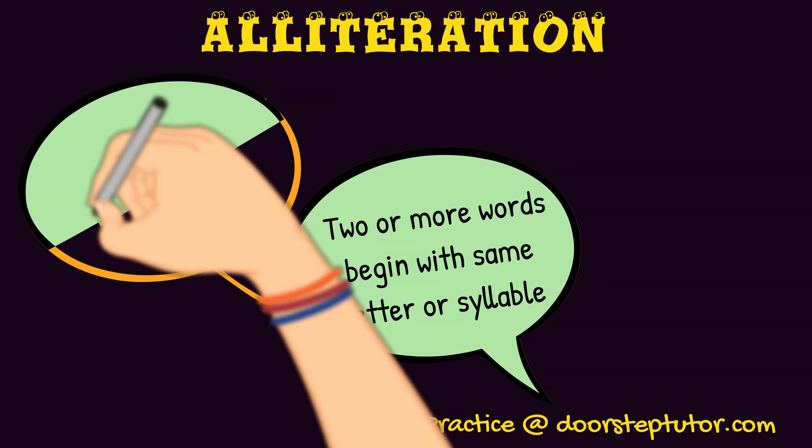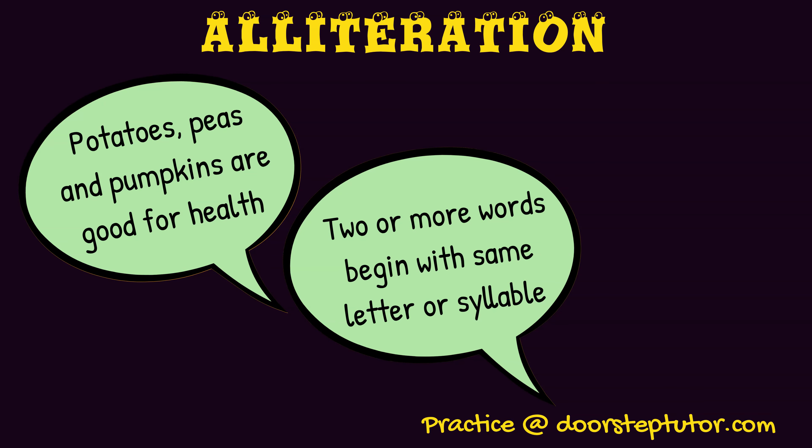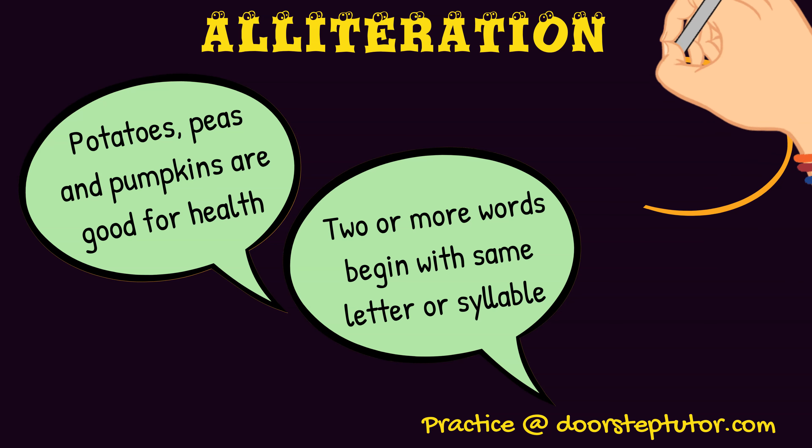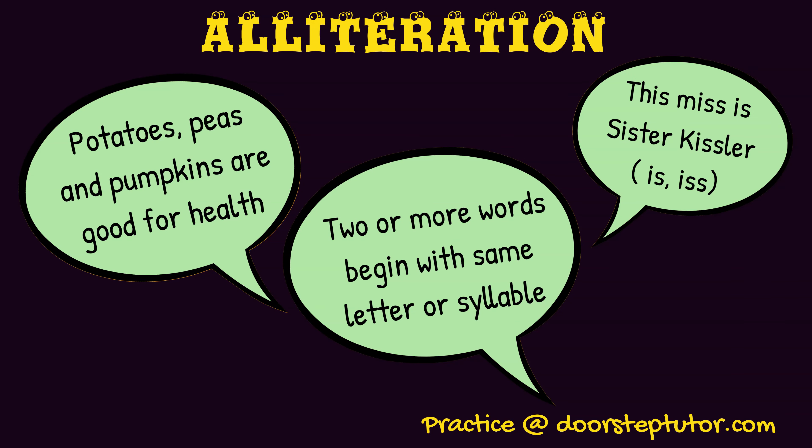For example, 'Potatoes, peas and pumpkin are good for health.' Here, three words in the beginning start with the letter P, so that is alliteration. Another example: 'This miss is sister Kizla.' Look into the words in the brackets — the 'is' sound is repeated in 'this', 'is' and 'sister', and the 'iz' sound is repeated in 'miss' and 'Kizla'. So all these go into alliteration.